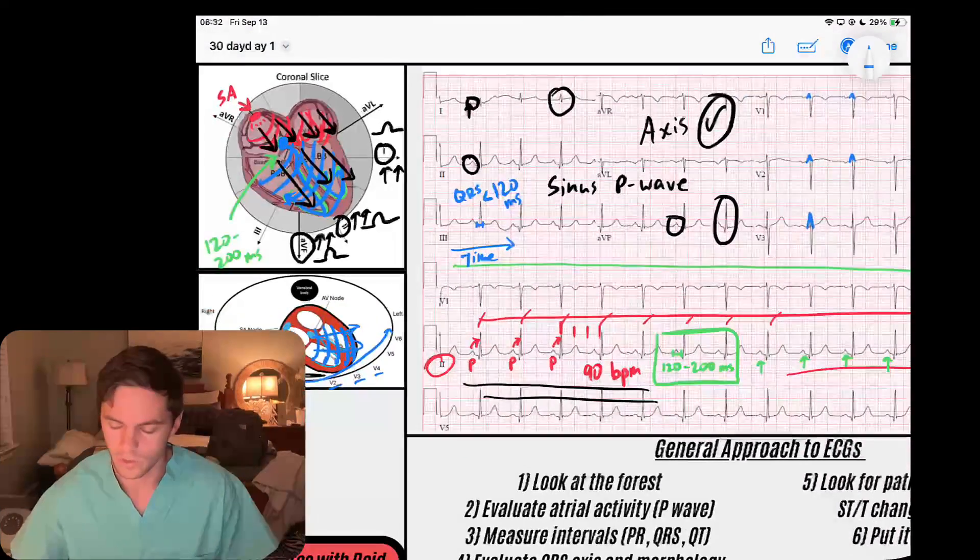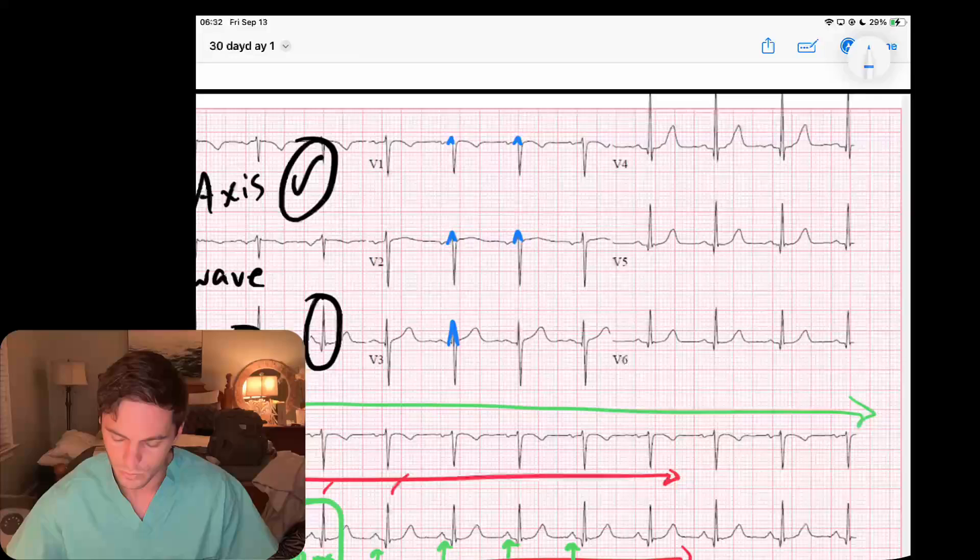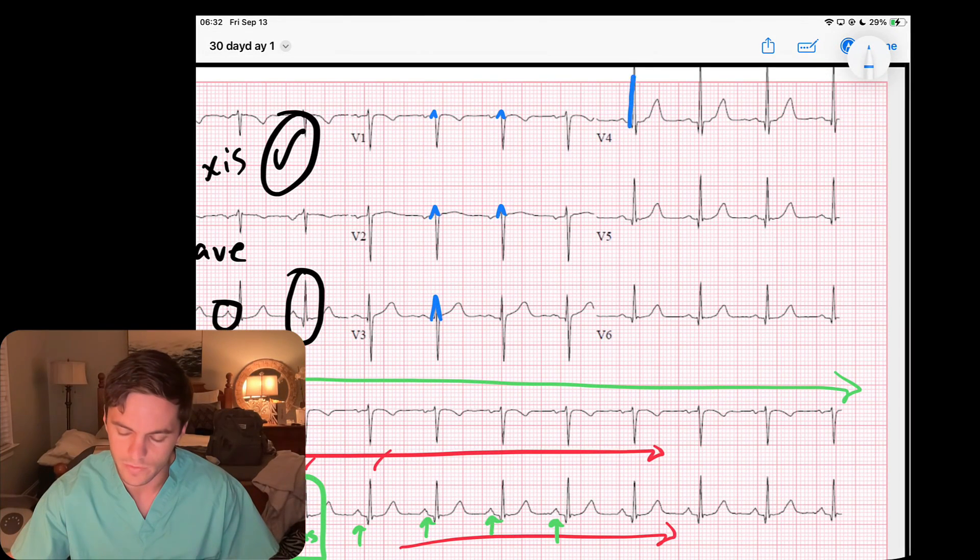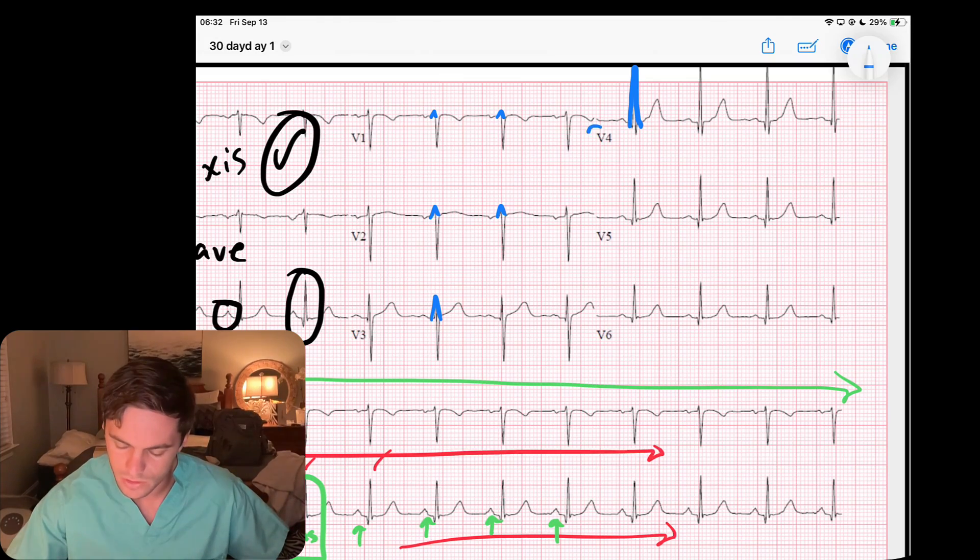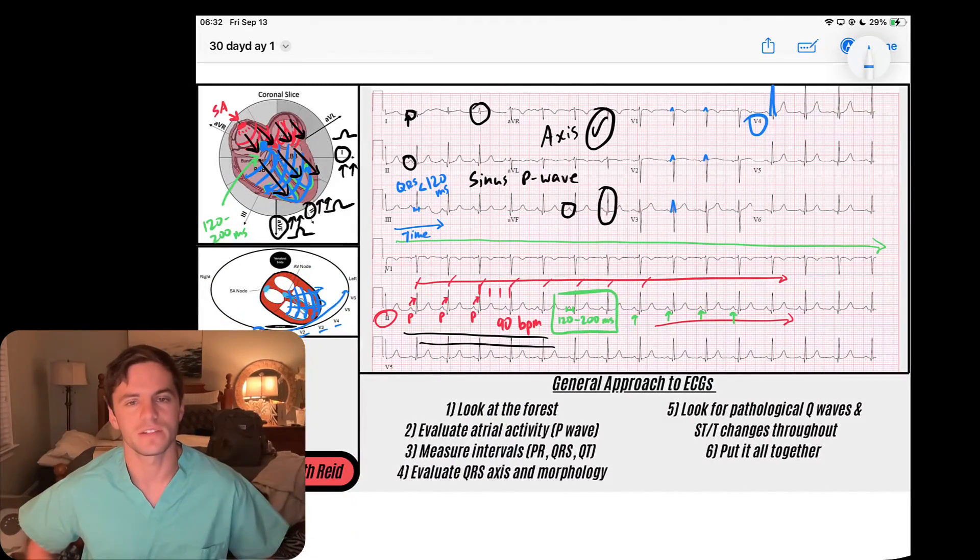The depolarization in the ventricle is really headed this way, so we're going to get growing R waves through the precordium until we have R waves that are dominating—meaning they're higher than the S waves. We see we have good R wave transition here at V4. That's my good QRS evaluation.